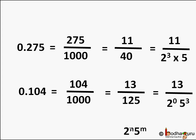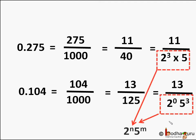The denominator 125 can also be written as 2 to the power 0 into 5 cubed, because 2 to the power 0 is 1. Notice a simple pattern: when we convert terminating decimal numbers like 0.275 and 0.104 into fraction form, the prime factorization of denominator q is of the form 2 to the power n into 5 to the power m, where n and m are non-negative integers — that is, the exponents n and m can be 0, 1, 2, 3, and so on.